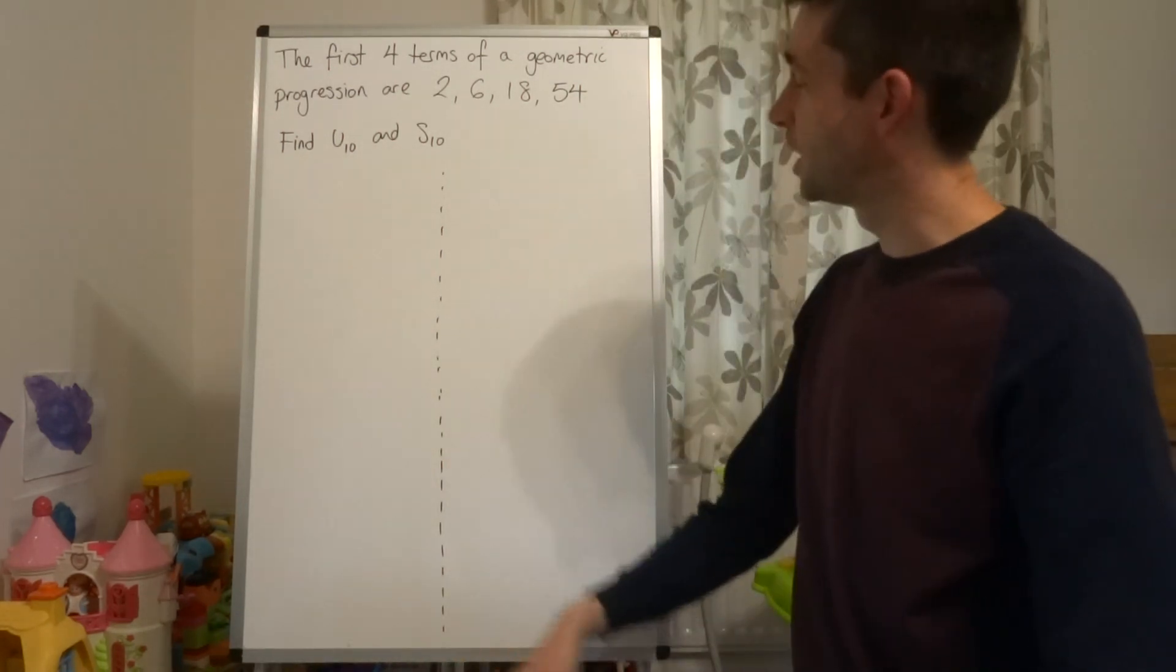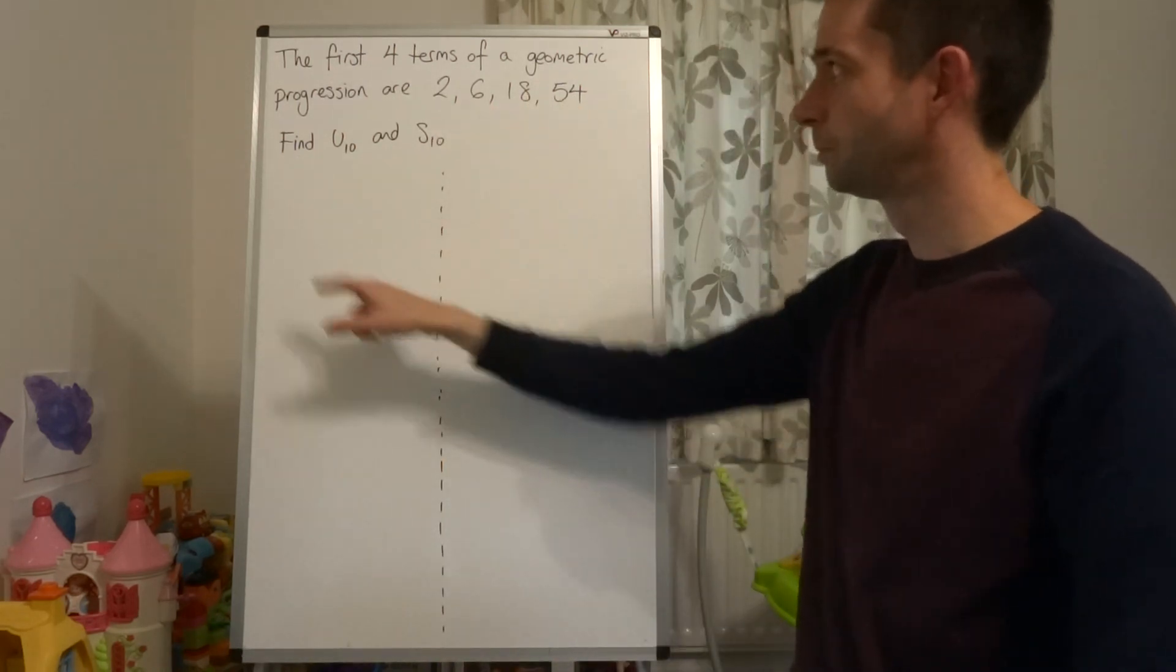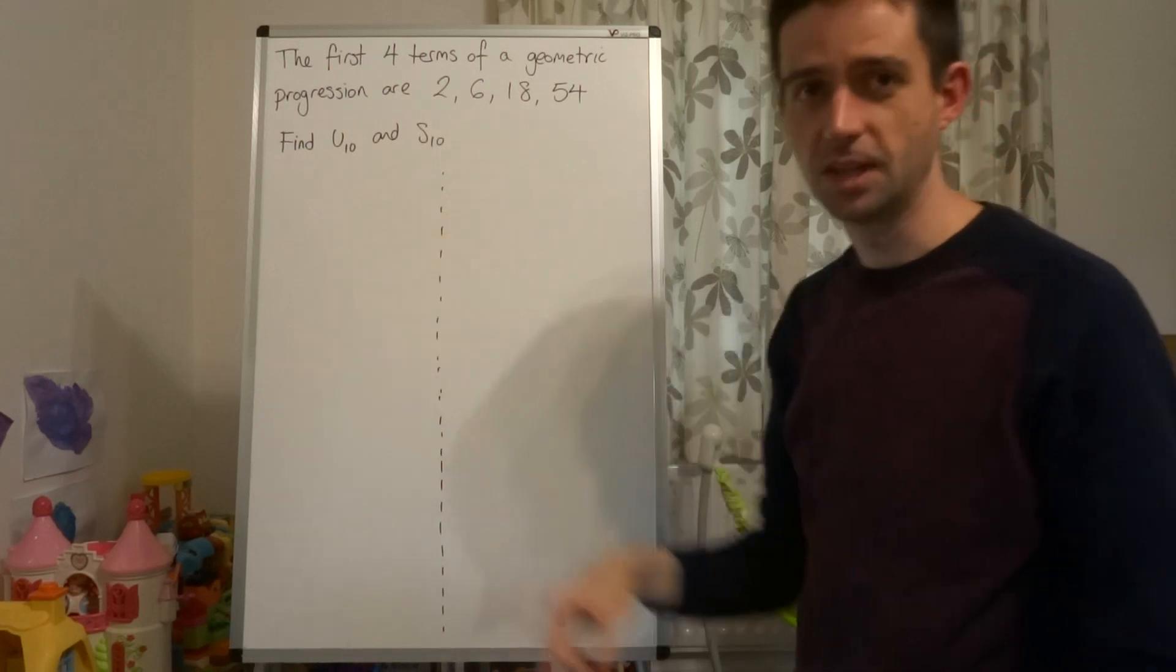Here we have the first four terms of a geometric progression: 2, 6, 18, 54. Find U10 and S10.